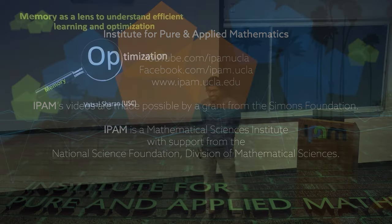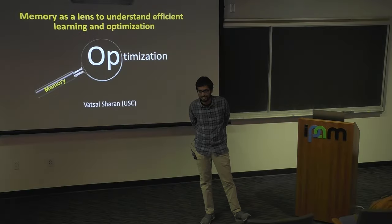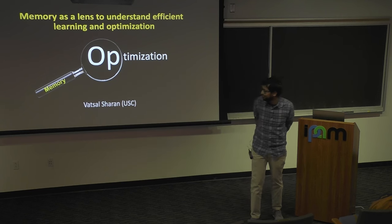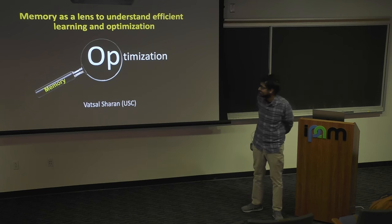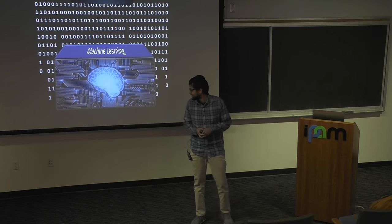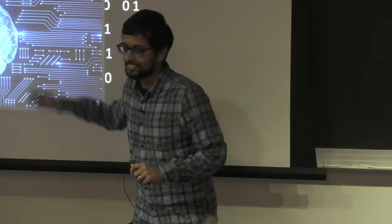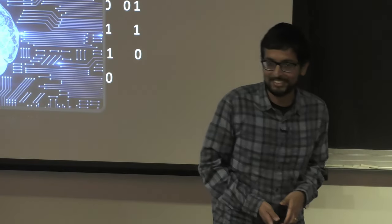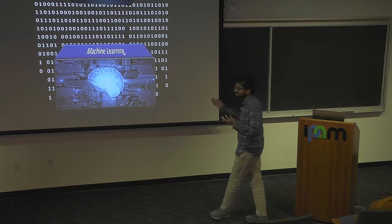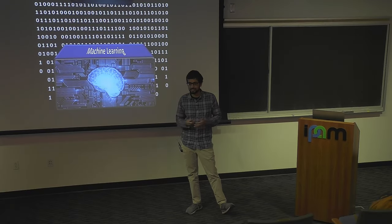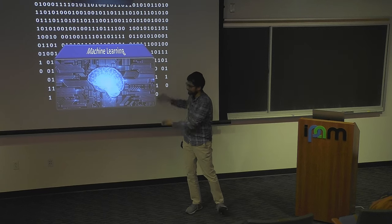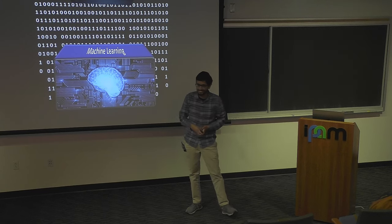Today I'll be talking about using memory to understand what is efficient in learning and optimization. At a very simplistic level, you can think of machine learning as some kind of box — some might call it a magical box — which harvests some impressive amount of computational power and an equally impressive amount of data raining down on it.